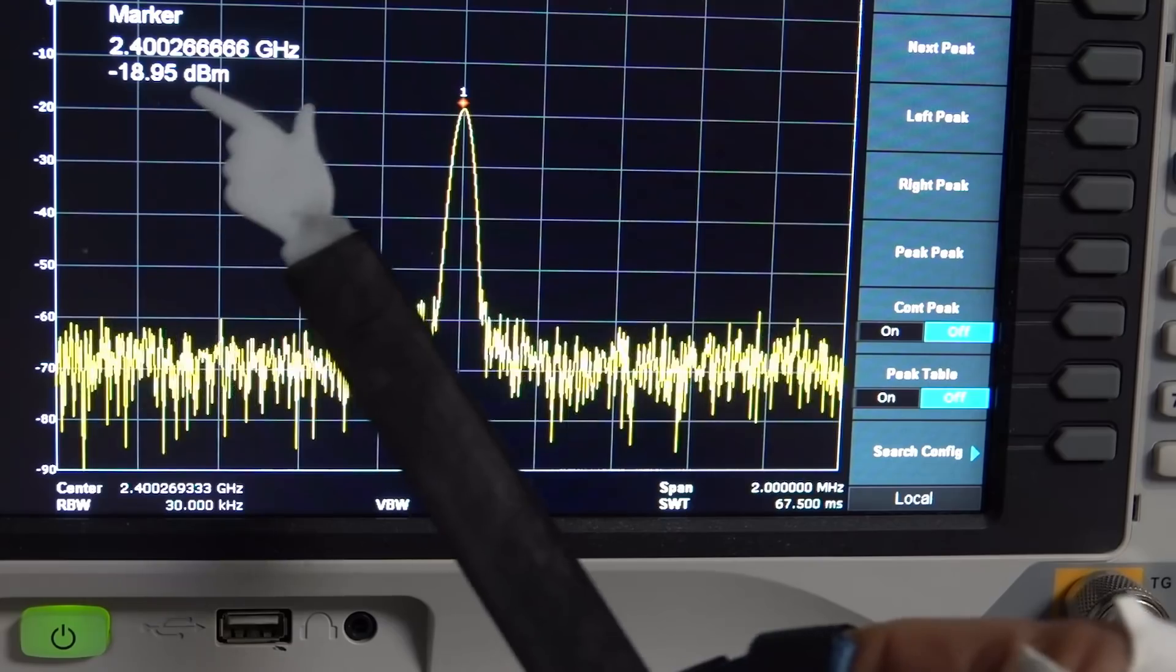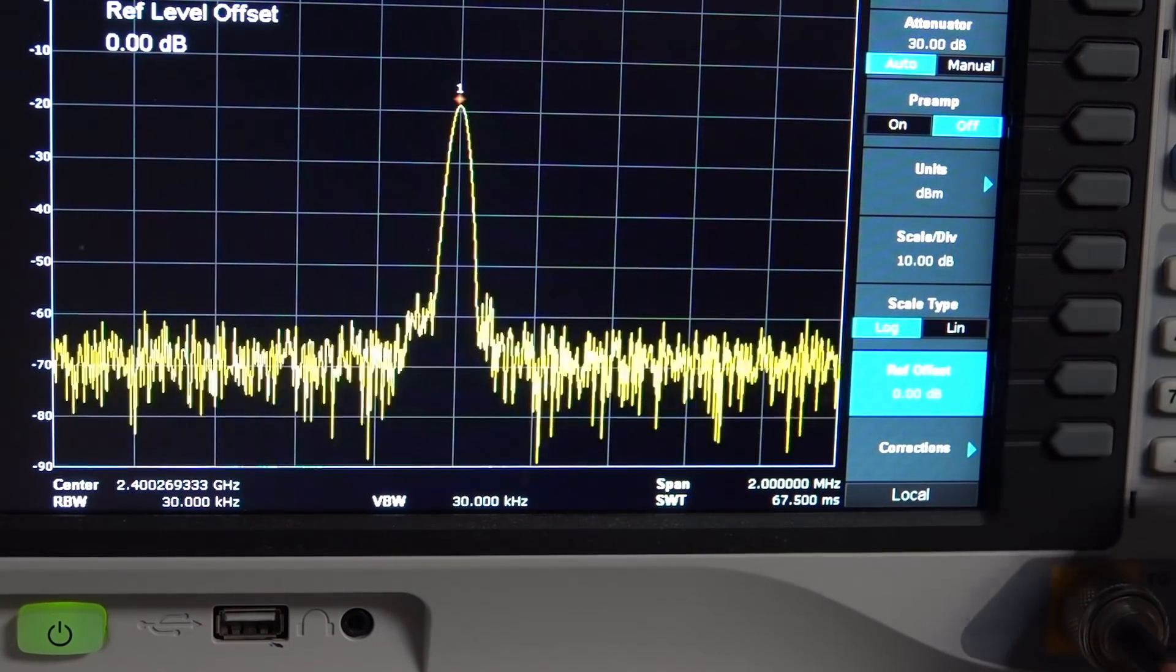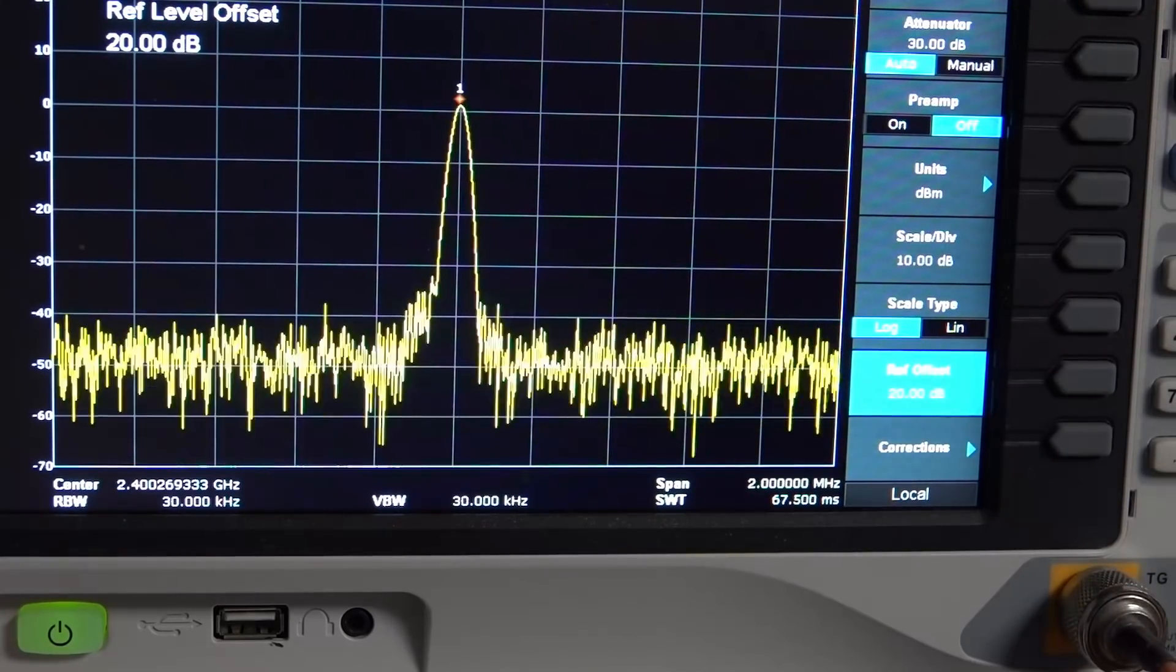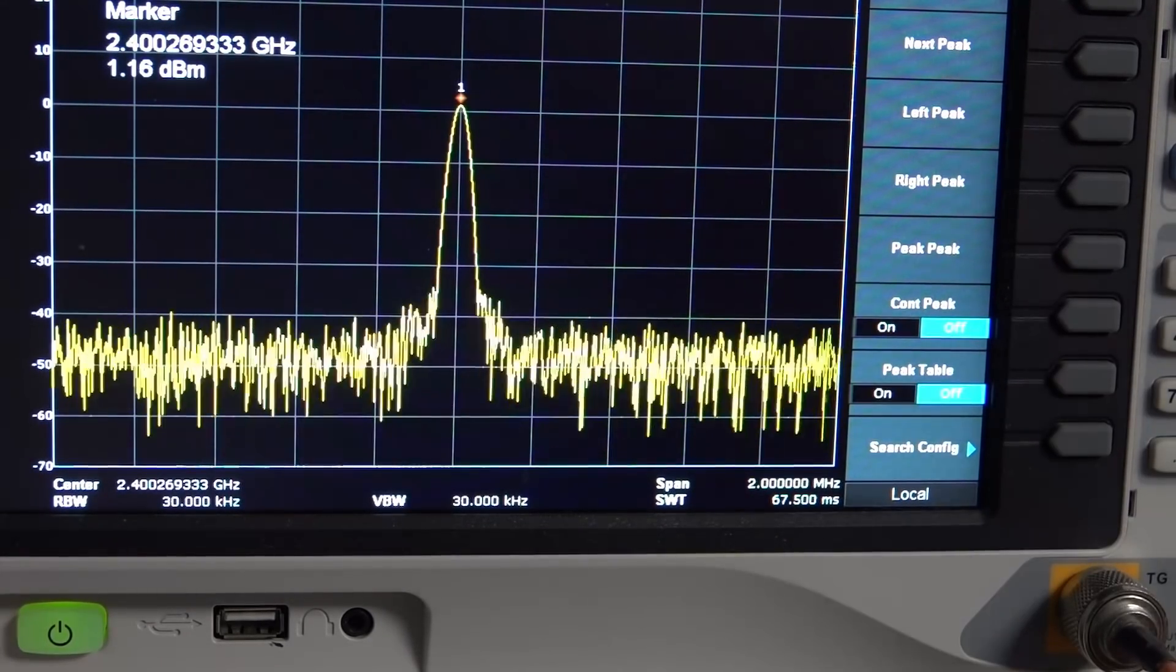The maximum power is around minus 19 dBm. Of course, we have to add the 20 dB of the attenuator. The instrument can do that calculation automatically, and now it shows around 1 dBm or 1 mW.